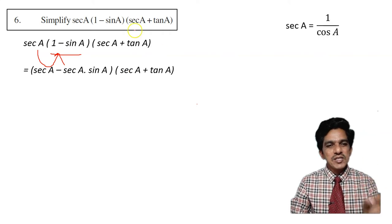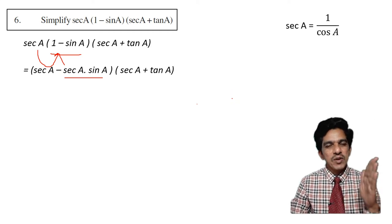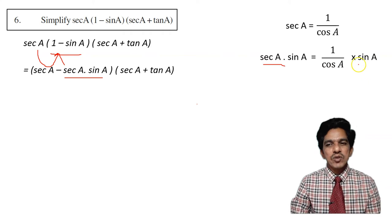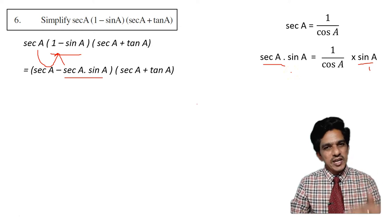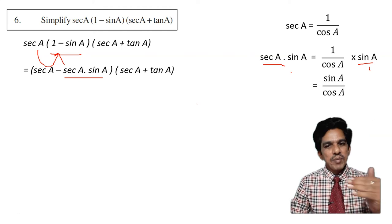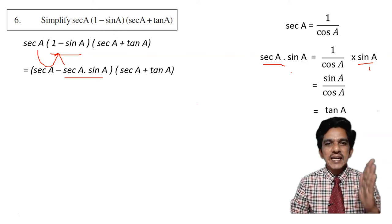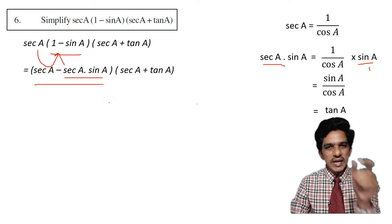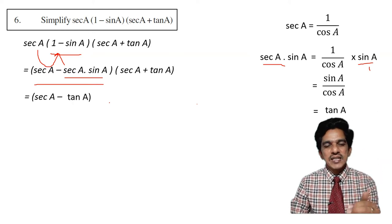Now we need to simplify secant a into sin a. We already know that secant a is the reciprocal of cos, that is 1 by cos a. So secant a into sin a equals 1 by cos a multiplied by sin a, which gives sin a by cos a. We already know that sin a by cos a is tan a. So the first factor becomes secant a minus tan a, and the second term is secant a plus tan a.